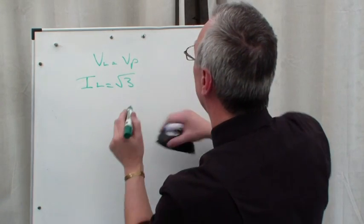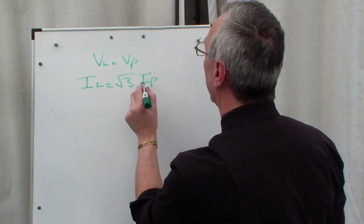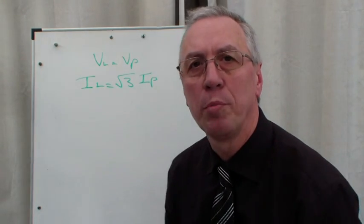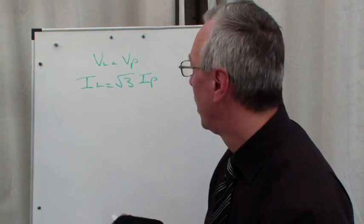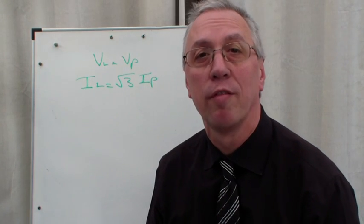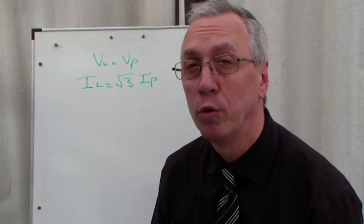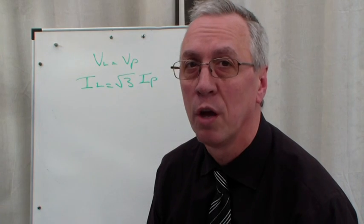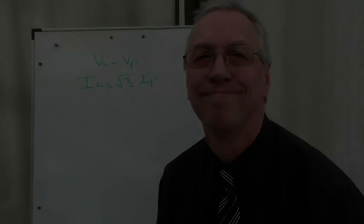Oops, spot the deliberate mistake: IL = √3 × IP. If you always write the formula down in its basic form and then transpose it to find the value that you want, following the rules that we've looked at in these videos, you shouldn't go far wrong. Thank you.